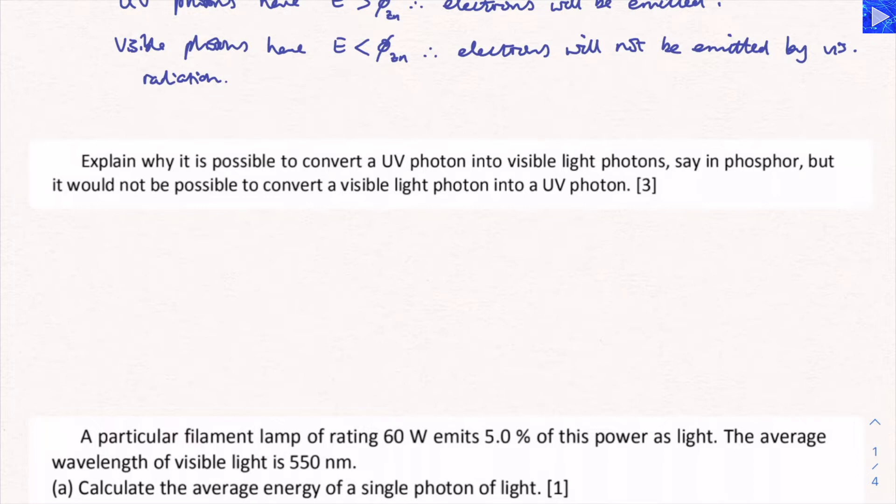Now we're just going to compare those photon energies to each other. So UV photons have a frequency larger than visible photons. And photon energy is related to frequency, so E equals hf. Therefore, UV photons have higher energies than visible photons.